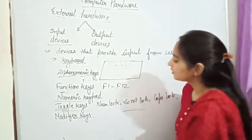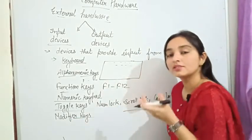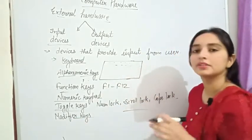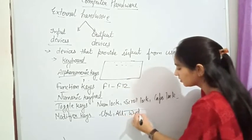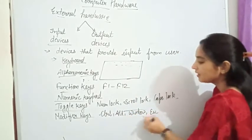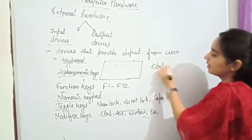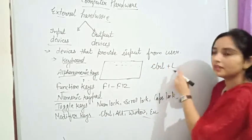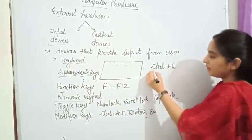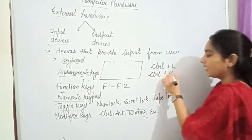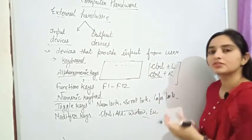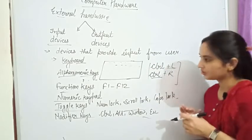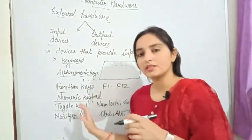Next, we have modifier keys. Modifier keys are specific keys that can change the function of different keys when combined with them — for example, Control, Alt, Windows logo, and Escape key. For instance, Control+M in MS Word is for left alignment, and Control+R is for right alignment. So the Control key changes the function of different keys depending on what it is combined with. These are the different types of keys on our keyboard.